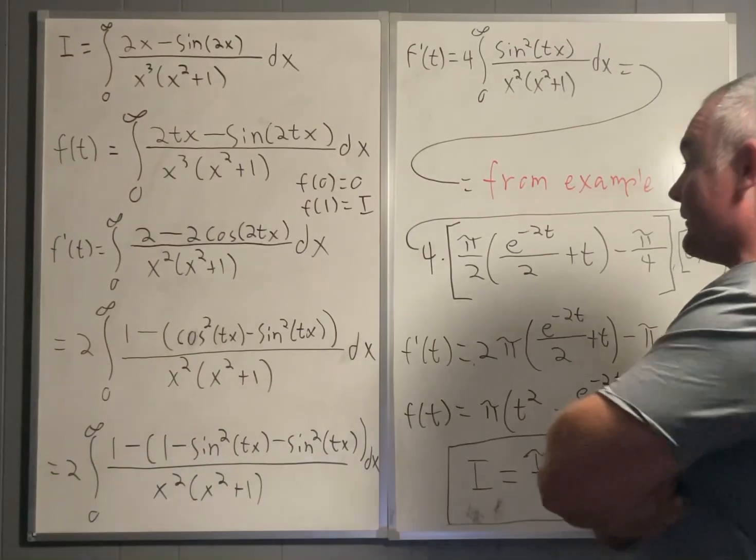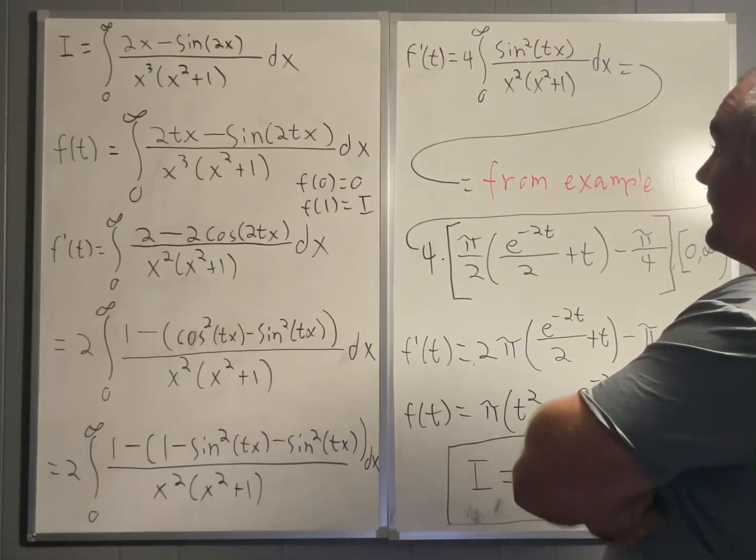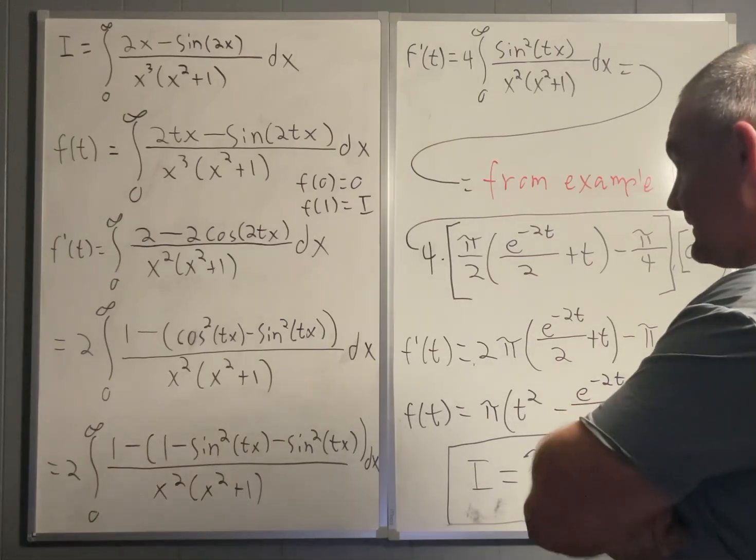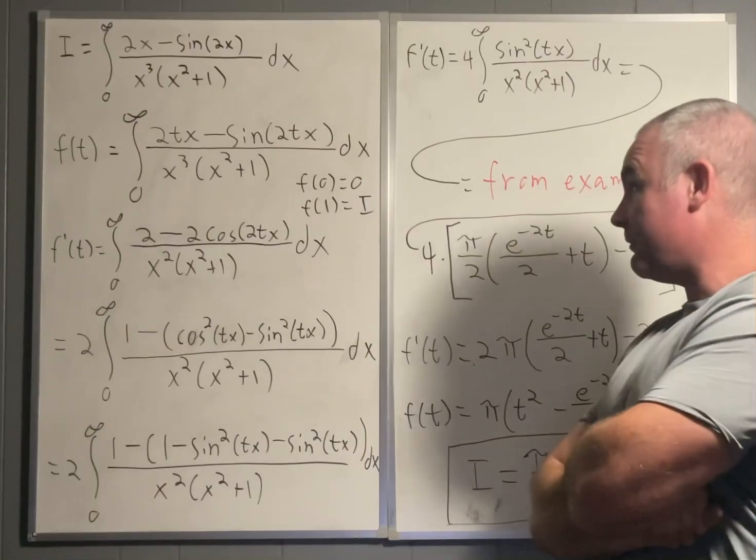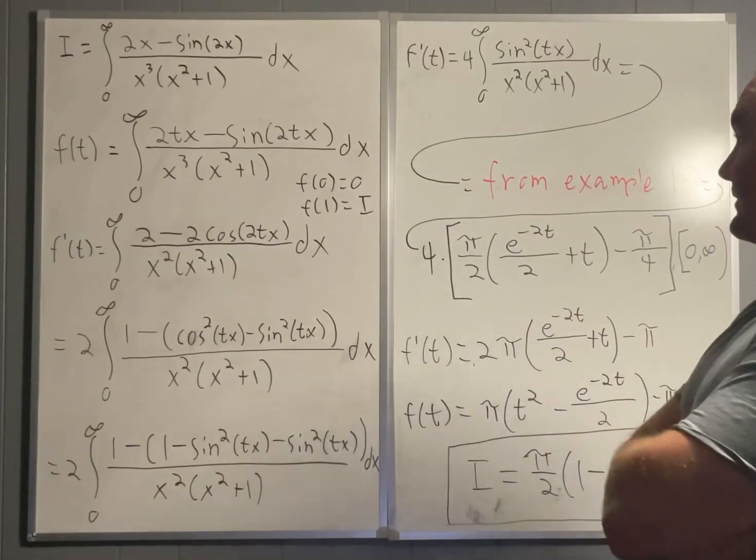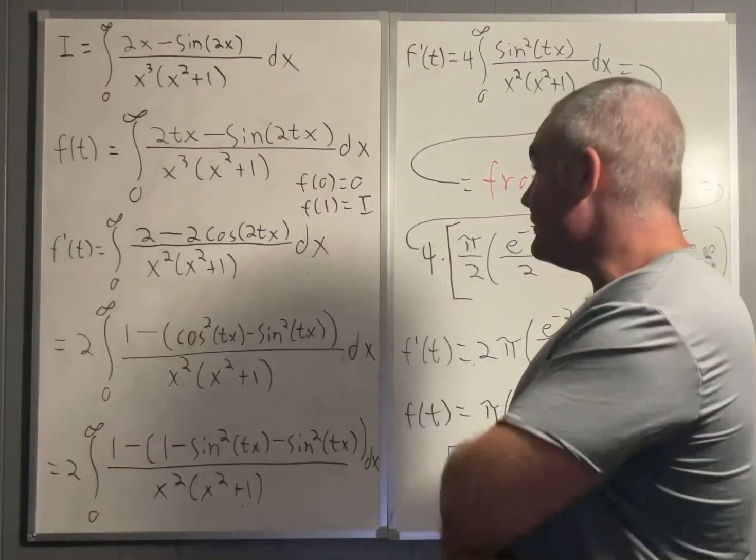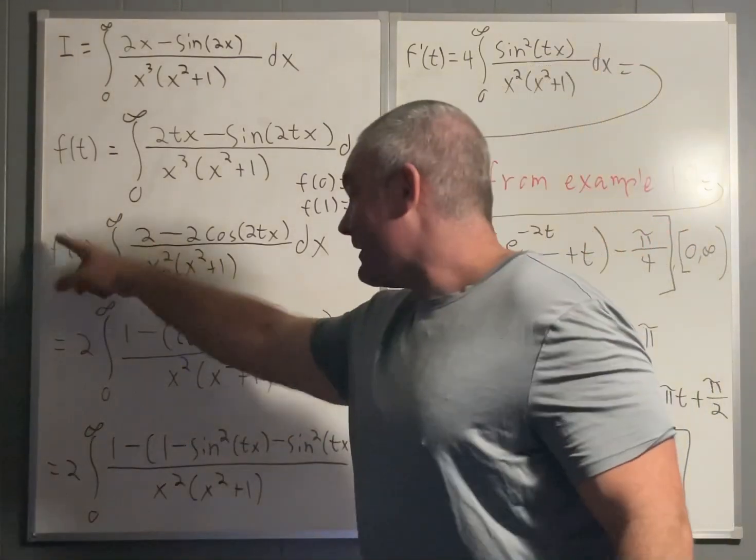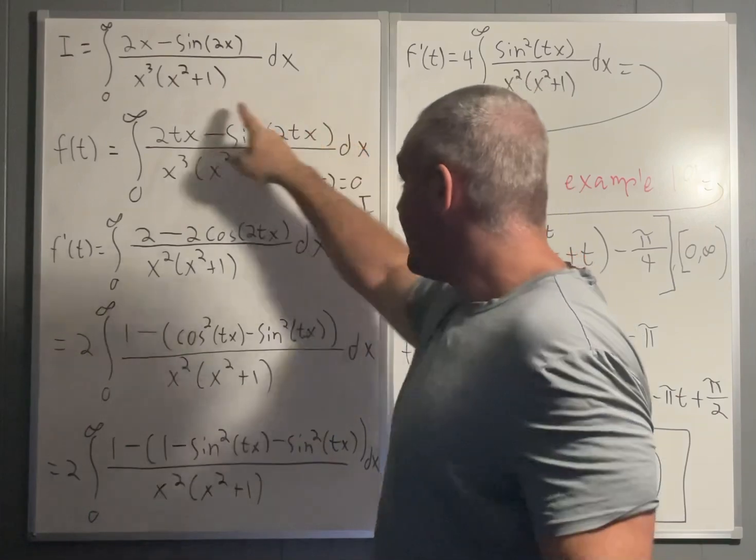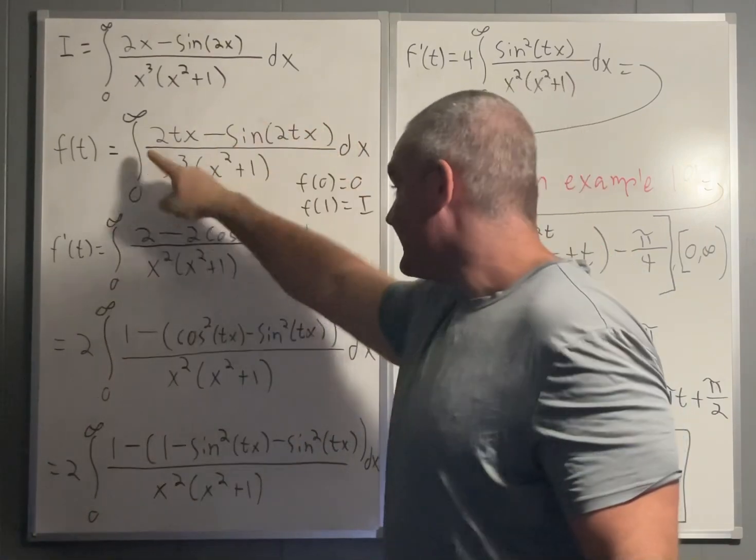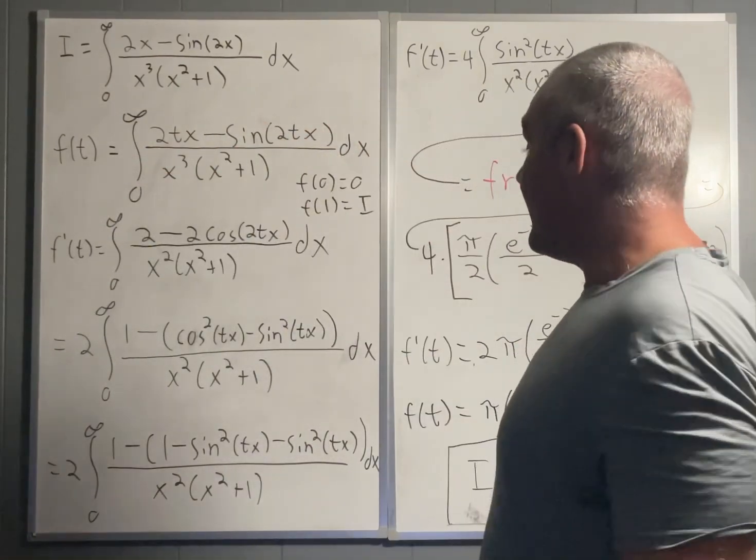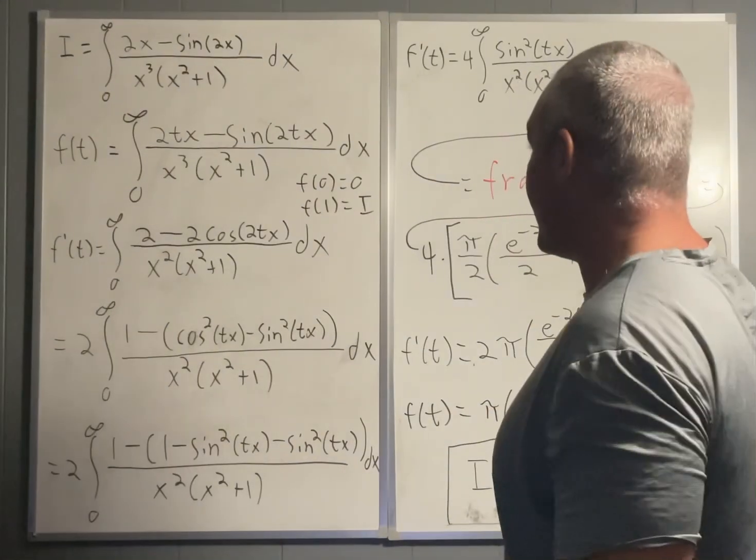So the first step is to take a derivative with respect to t using the Leibniz rule for differentiation under the integral sign. And all you do to do that is you can arrive at f prime of t by taking the partial with respect to t of the integrand right there. My first video explains why that's true.